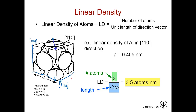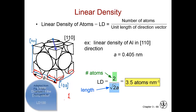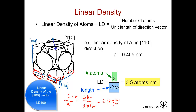For the [1,0,0] direction, we have 1, 2 radii that we traverse, which means we have one diameter — so only one atom that we traverse. We're dividing by A, because that's our side length, the distance of our unit vector. One atom divided by 0.405 nanometers gives us 2.47 atoms per nanometer.